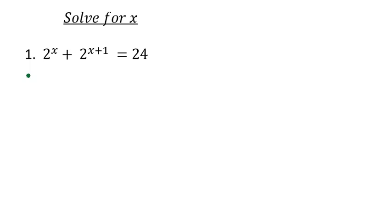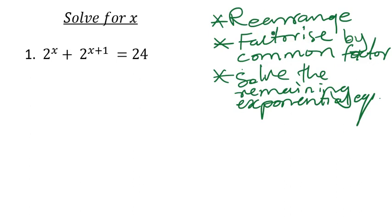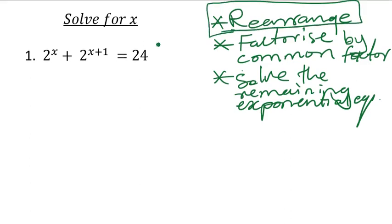So what we are having is solving for x. When we look at the problem, it's an exponential problem. There are three things you need to know: number one, you need to rearrange the equation; number two, you need to factorize by common factor; number three, you need to solve the remaining exponential equation. By rearranging, I mean you need to group the terms that have x on the left-hand side — or the right-hand side is fine — but they must be on one side of the equation.